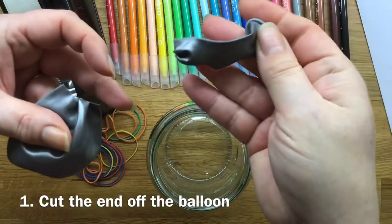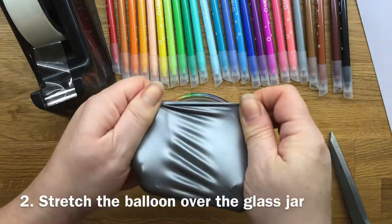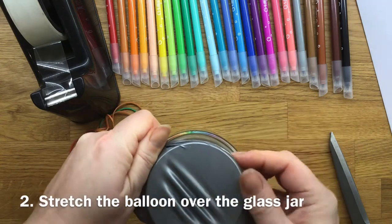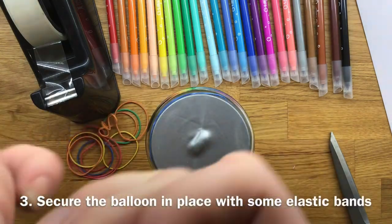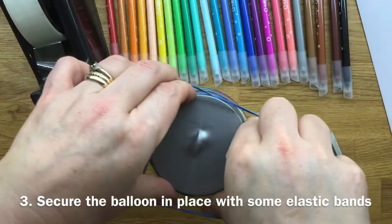Cut the end off the balloon like you see me doing here and then stretch the balloon over the top of the jam jar and then secure it tightly with a few elastic bands.